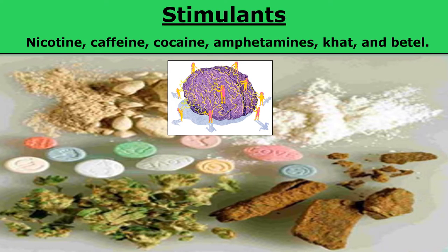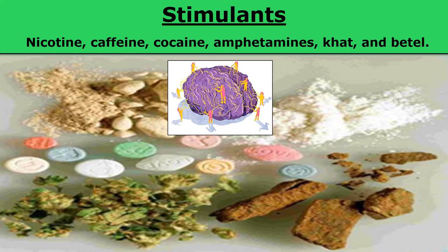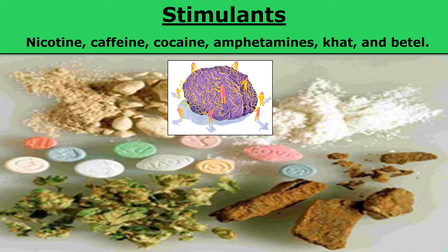Another category is stimulants, often known as 'uppers' — as opposed to depressants, which are called 'downers.' There are many different kinds of stimulants: nicotine, caffeine, cocaine, amphetamines, khat, and betel. These drugs affect chemicals in the brain like epinephrine, norepinephrine, and dopamine that arouse the body, stimulate it, increase the heartbeat, and increase blood pressure.